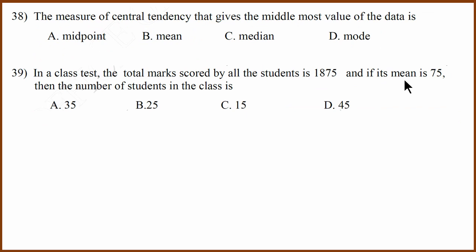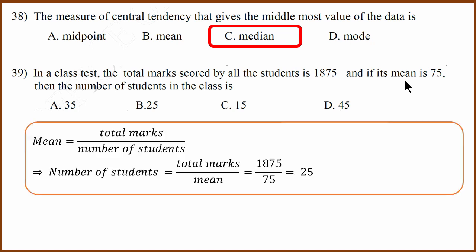Thirty-eighth question: the measure of central tendency that gives the middlemost value is the median. Thirty-ninth question: in a class, the total marks scored by all students is 1875 and the mean is 75. The number of students equals total marks divided by mean, which is 1875 divided by 75. The answer is 25.